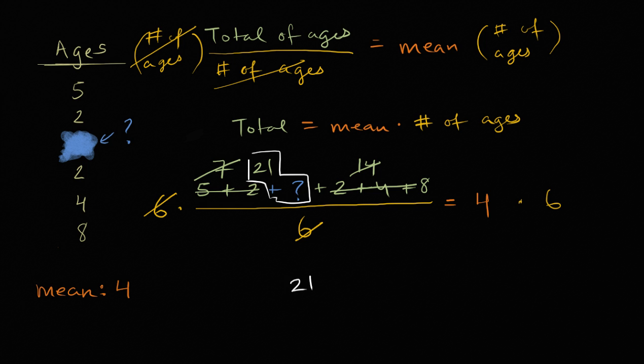So we get twenty-one plus question mark. Twenty-one plus this question mark, the thing that we're trying to solve for, the missing number, is going to be equal to four times six. Well what's four times six? That's twenty-four.